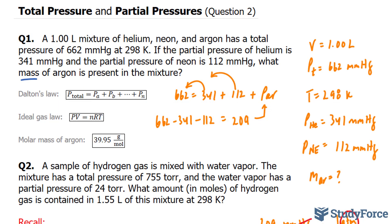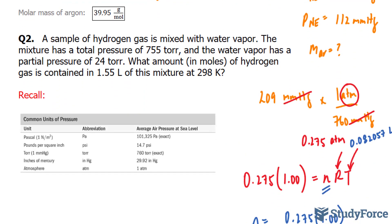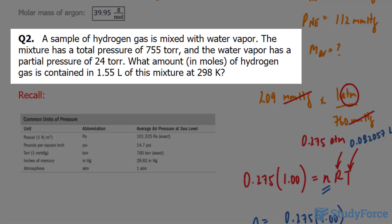In question 2 of our total pressure and partial pressure series, we end it off with question number 2. The question reads: a sample of hydrogen gas is mixed with water vapor. The mixture has a total pressure of 755 torr and the water vapor has a partial pressure of 24 torr. What amount in moles of hydrogen gas is contained in 1.55 liters of this mixture at 298 Kelvin?